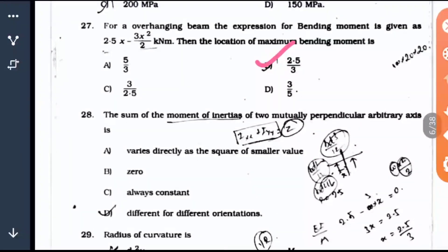Question 28: The sum of the moment of inertias of two mutually perpendicular arbitrary axes is what? Here it is always a constant.